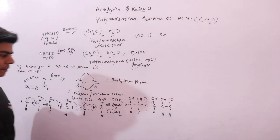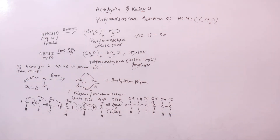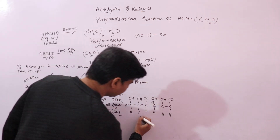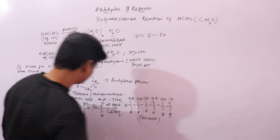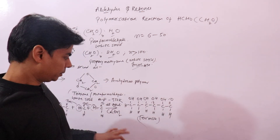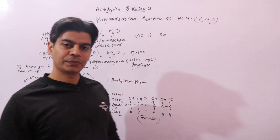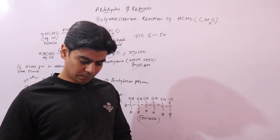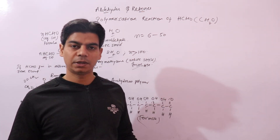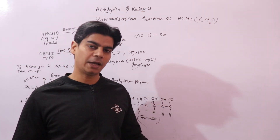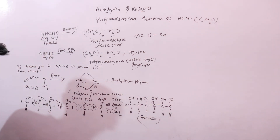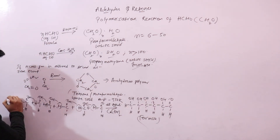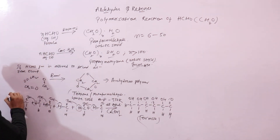The product is a mixture of sugars called formose sugar. This reaction is important to remember as an exception case where an aldehyde without alpha hydrogen undergoes aldol condensation.